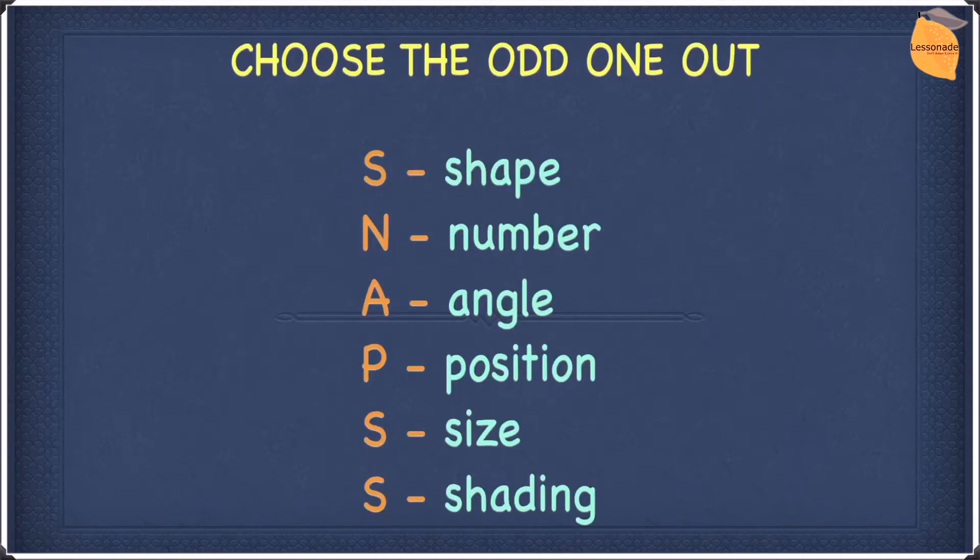S stands for shape. One shape might be different to the others. N stands for number. The number of shapes or the number of sides in a shape could be different. A stands for angle. The angle of a shape might be different, reflection or its rotation.